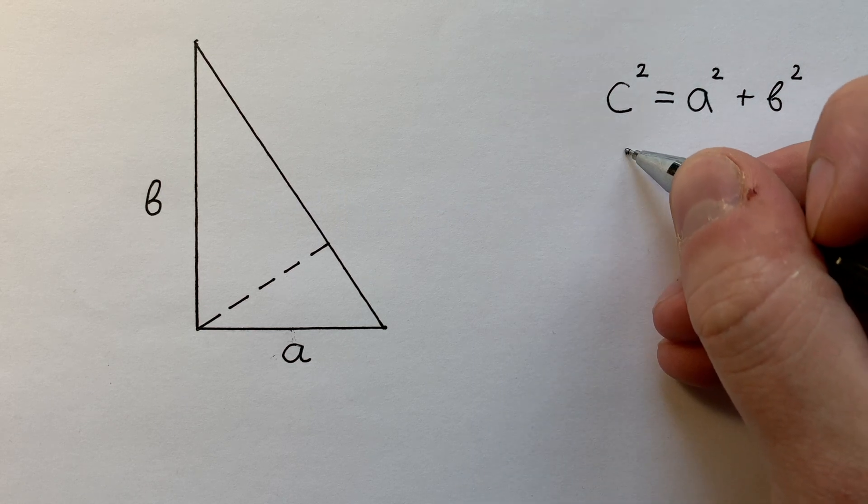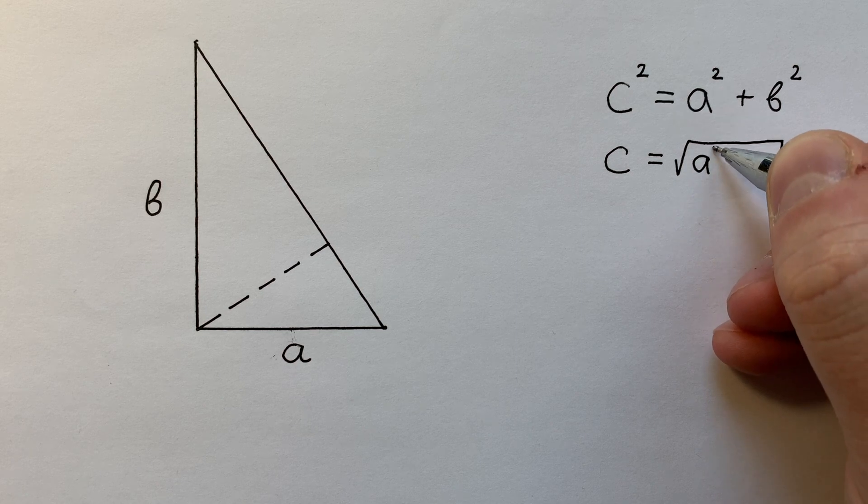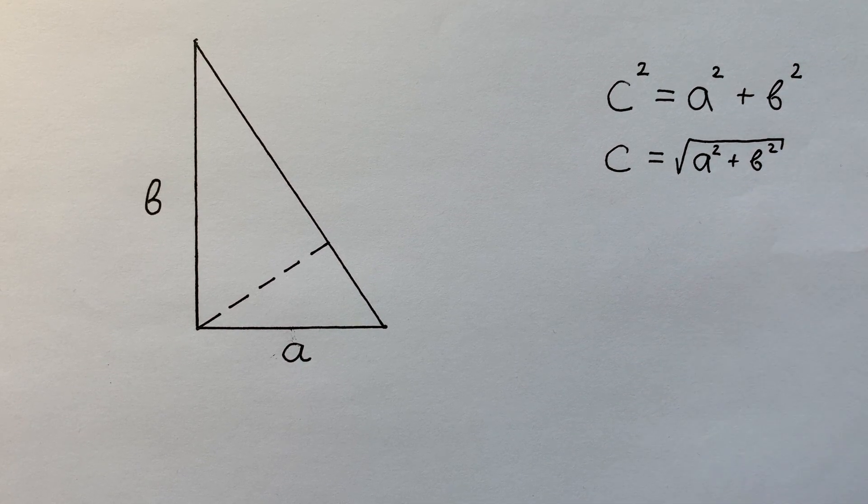And from this we get that C equals the square root of A to the power of 2 plus B to the power of 2.